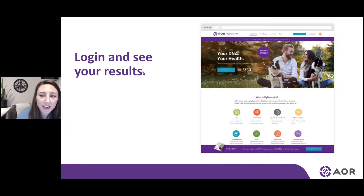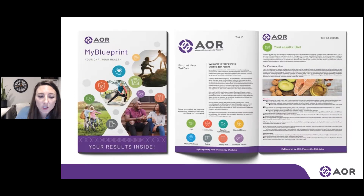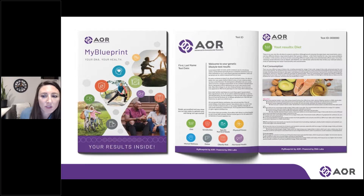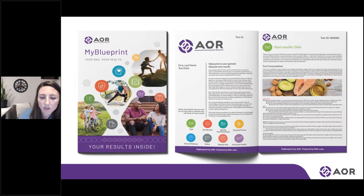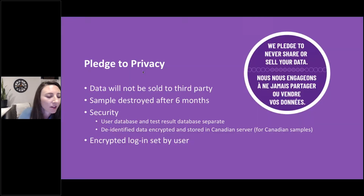There is a PDF report as well that can be printed. This gives you an overview of how the report is laid out — it'll talk about general information about the importance of diet, for example fat consumption. If there's a 'take action' note, that's when we've identified a certain version of a gene that has an outcome or potential outcome on your health. And then, more importantly, what are the exact steps you need to follow in order to help mitigate that risk.